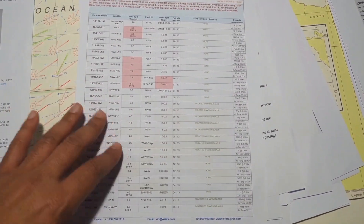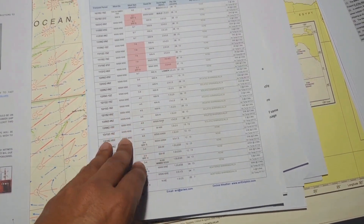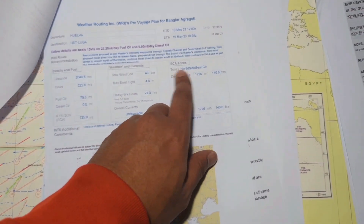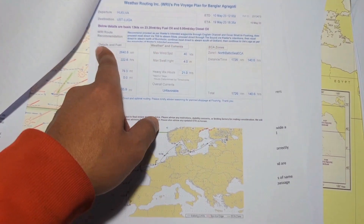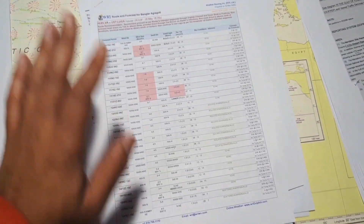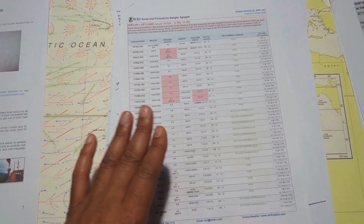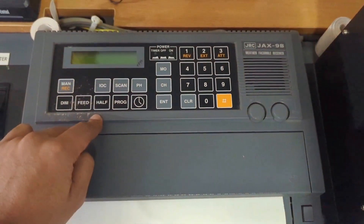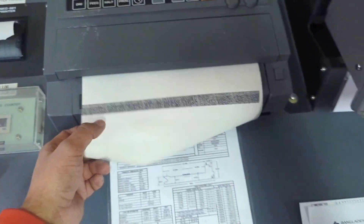This is a paid weather service. Our paid weather service sends us pre-voyage data — very vital information like ECA zones, weather, and current details for the route. They always send it as guidelines. Your company may have separate procedures for this, but the common one is to take a weather fax report while you are at the berth.